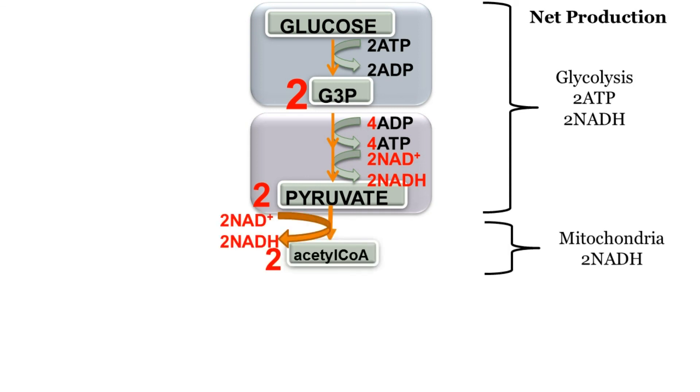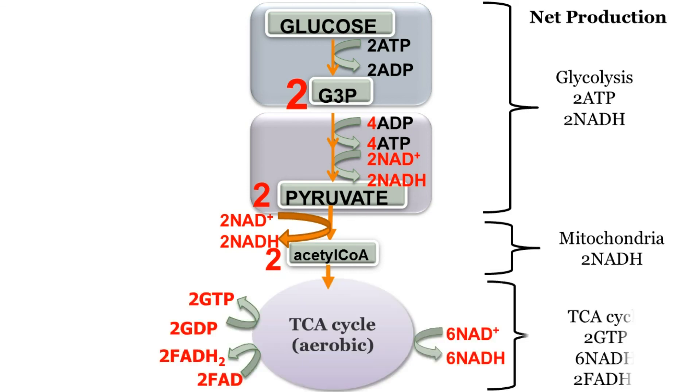From TCA cycle, we get 2 GTP, 6 NADH and 2 FADH2. Therefore, the total till now is 4 ATP, 10 NADH and 2 FADH2.